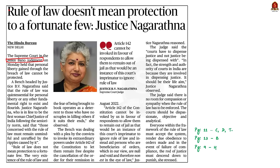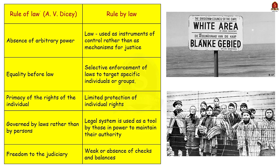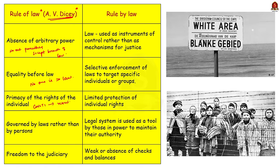Firstly, rule of law. The concept was first propounded by British jurist A.V. Dicey, who defines three principles. First, absence of arbitrary power — no man can be punished except for a breach of law. Second, equality before law — equal subjugation of all citizens to the ordinary law of the land, indicating no one is above the law. Third, primacy of the rights of individuals — the constitution is the result of the rights of individuals as defined and enforced by courts, rather than the constitution being the source of individual rights.